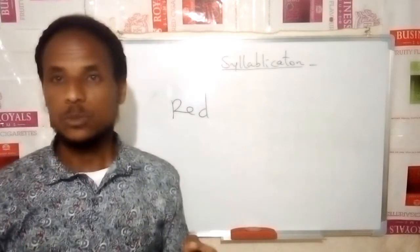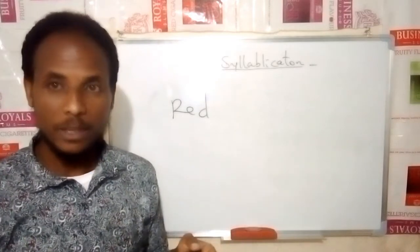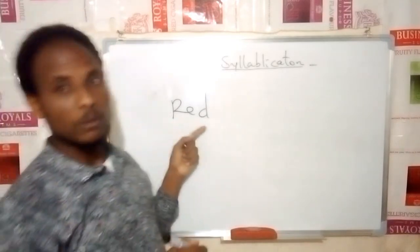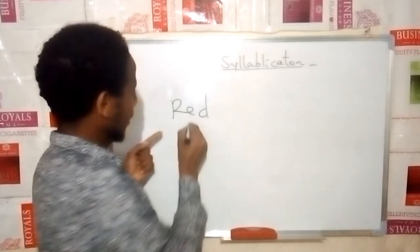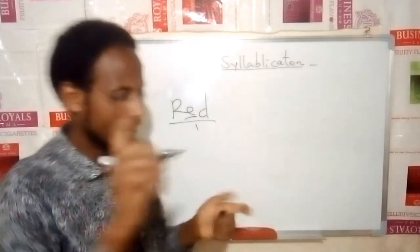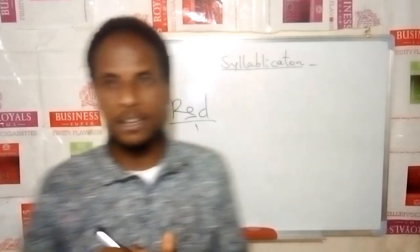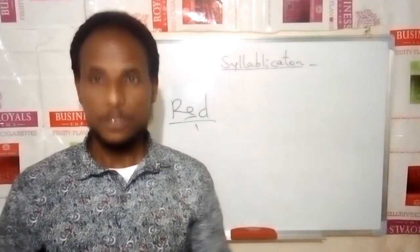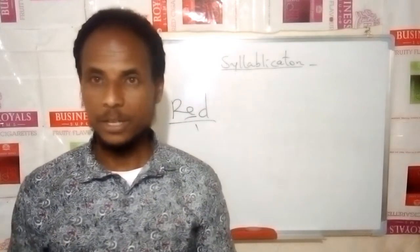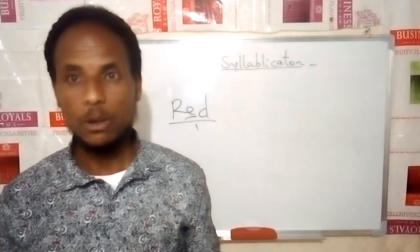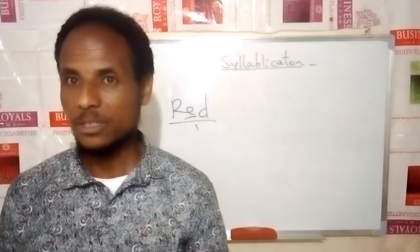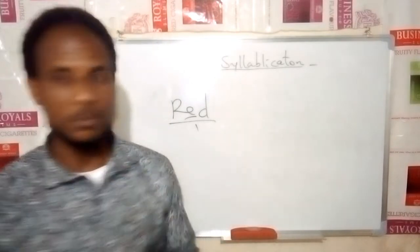Another example also has only one vowel sound, E, so it is monosyllabic. Bear in mind: if there is only one vowel sound in a word, it's called monosyllabic or a one-syllable word — but there are exceptions that I'm going to explain.